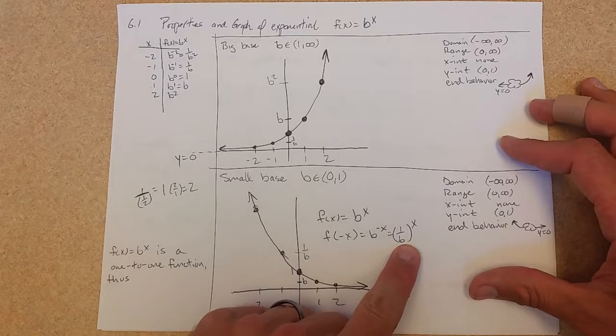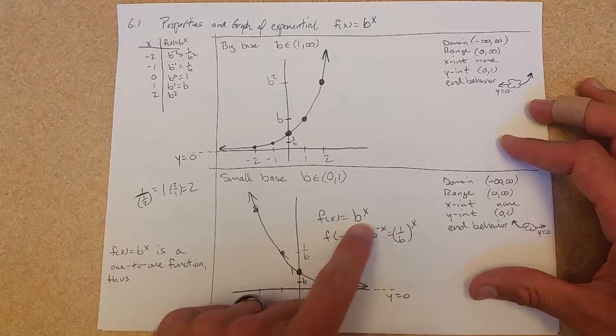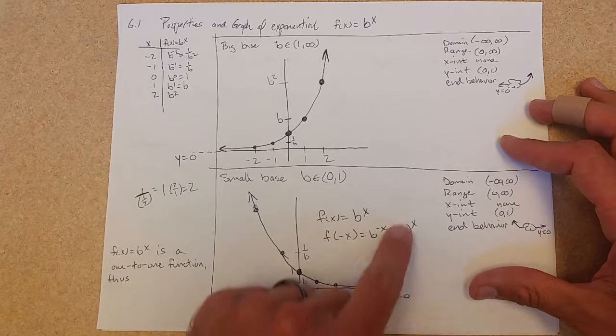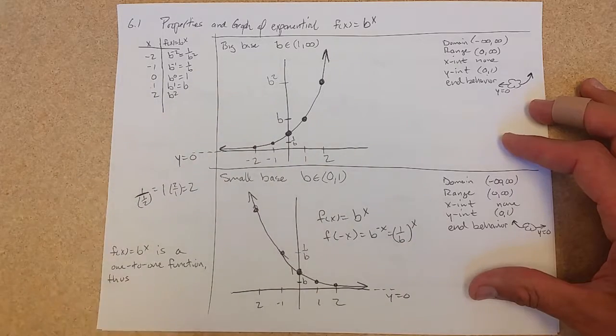And we get 1 over b to the x. So how do they differ? Well, if this base was small, the horizontal reflection would be 1 over b. So if this base was a half, this reciprocal would be 2 right here on that graph.